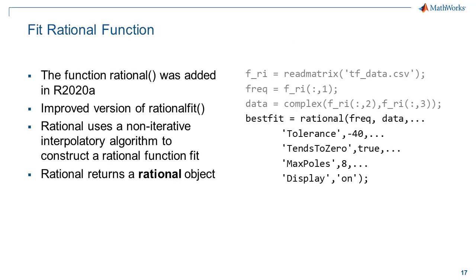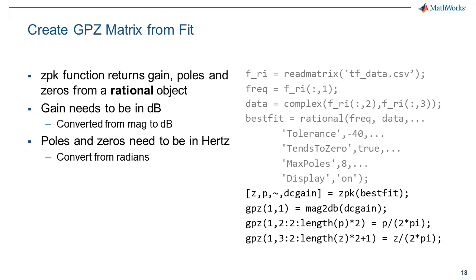The next step is to use the rational function from RF Toolbox to fit a rational function to the data. The rational function uses a non-iterative interpolatory algorithm to construct the fit, and the result is a rational object. The ZPK function is used to extract the gain, poles, and zeros from the rational object. The CERTES Toolbox CTLE requires the gain to be in dB and the poles and zeros to be in Hz. The ZPK function outputs are converted to dB and Hz in constructing the GPZ matrix, and the result is a GPZ matrix in a MATLAB workspace variable.